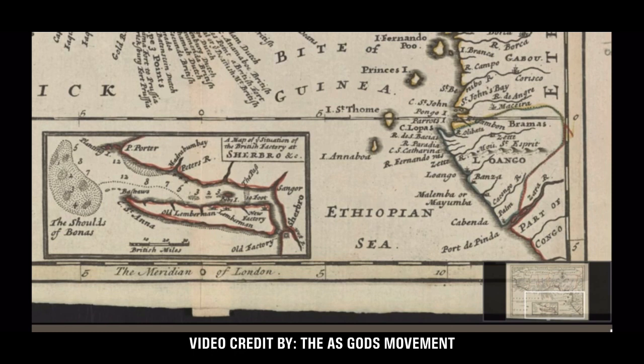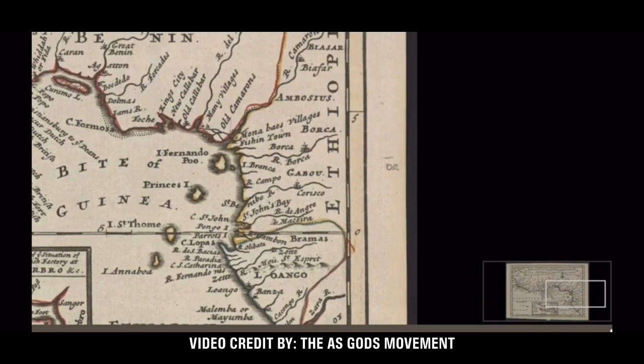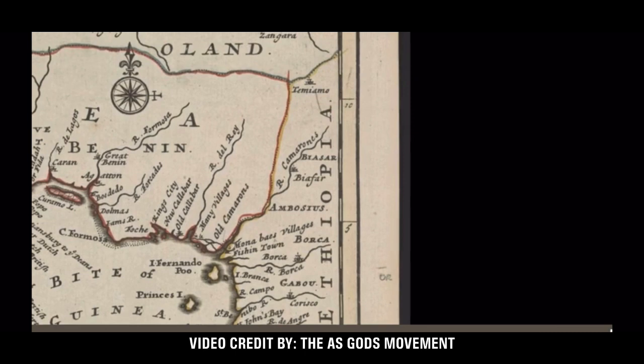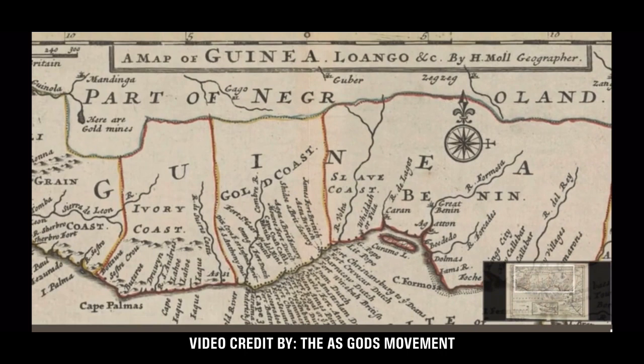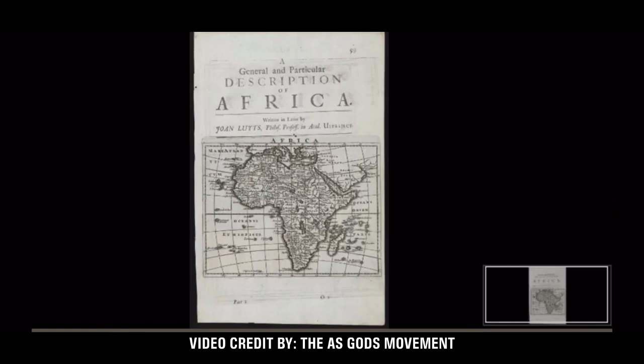You see this right here? This says Ethiopia. So guess where Negro land is located? In Ethiopia.